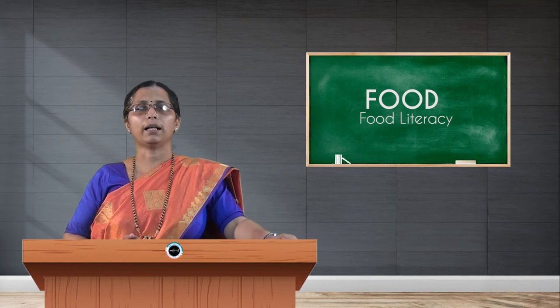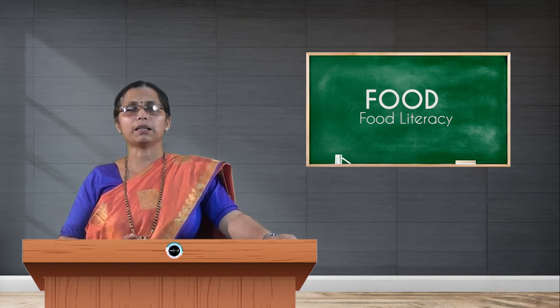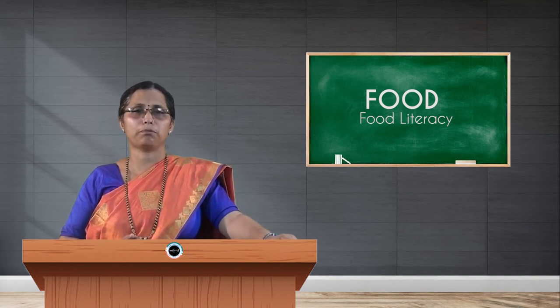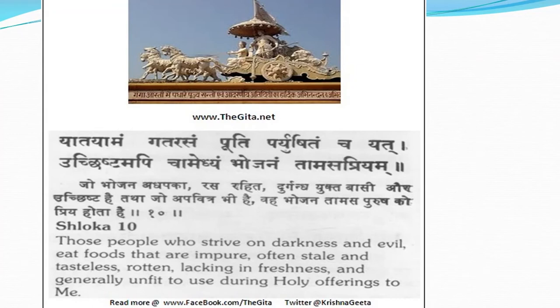Rajasic food should be avoided. In aseptic diet, food should be of a bland type where there is no stimulus responsible for pathogenesis or progression of the disease. Next, coming to tamasic food — the sloka from the Bhagavad Gita, shloka number ten: 'Yatayamam gatarasam puti parushitam chayat uchishtam api cha medyam bojanam tamasapriyam.'